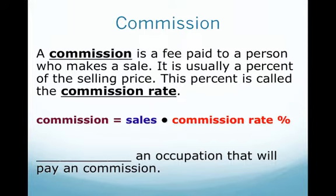Sentence frame one — Commission. A commission is a fee paid to a person who makes a sale. It is usually a percent of the selling price, and this percent is called the commission rate. The formula is: Commission equals sales times commission rate, where the commission rate is a percent.